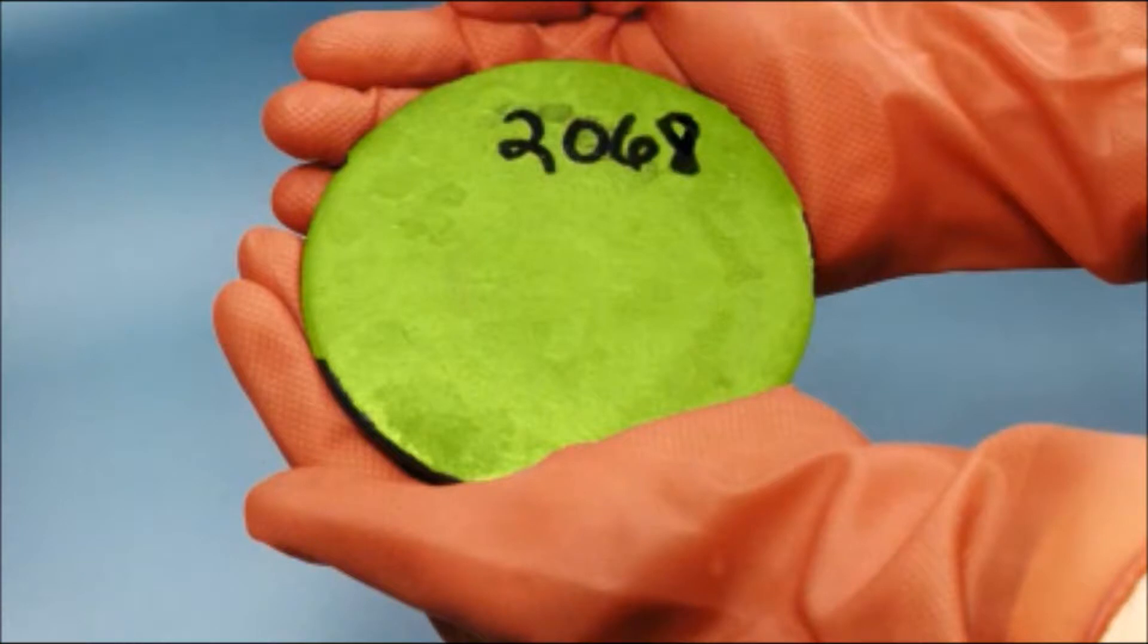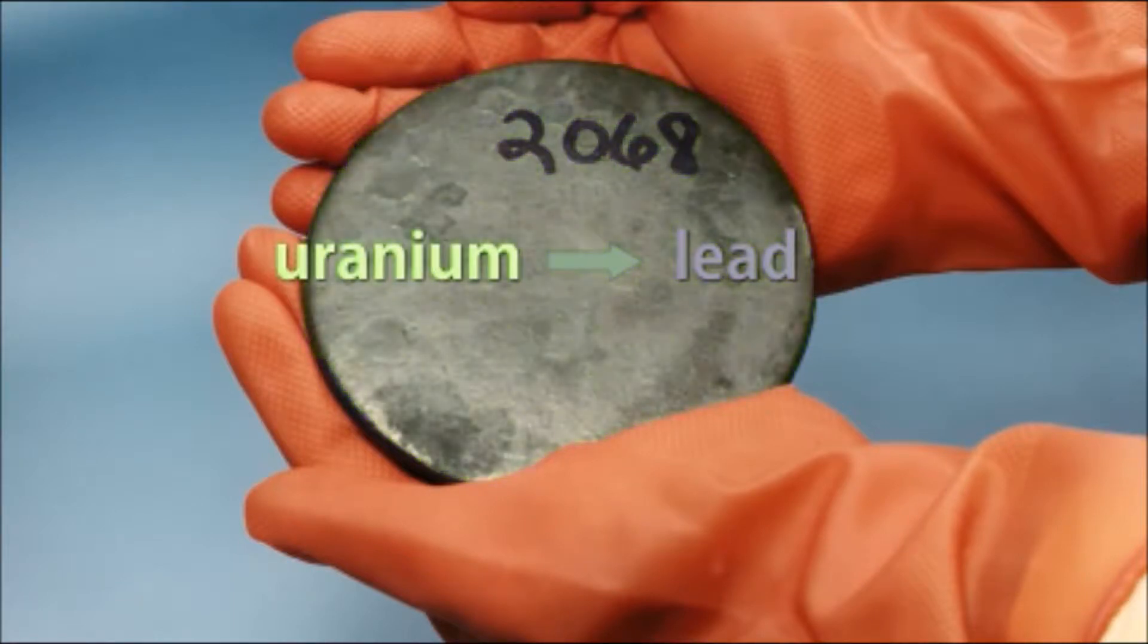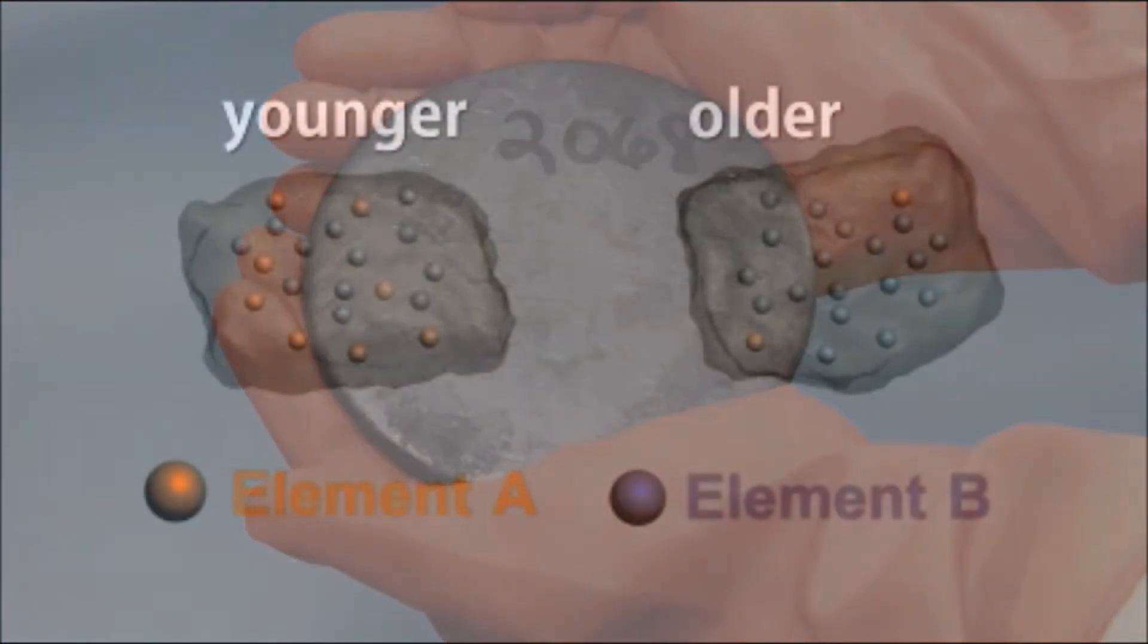Using this knowledge, Boltwood studied the rate of decay and found that whenever there was a mineral sample of uranium, there was always a trace of lead. He believed that this meant that lead was the last element remaining in the uranium decay process. From this, he measured the total amount of lead in the uranium sample, and with the known decay rate of uranium, he determined the approximate age of the rock sample.